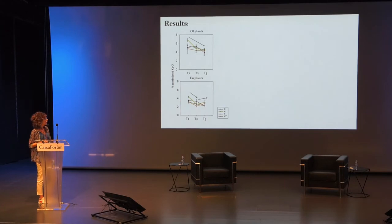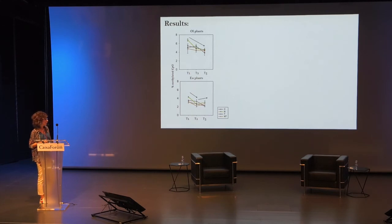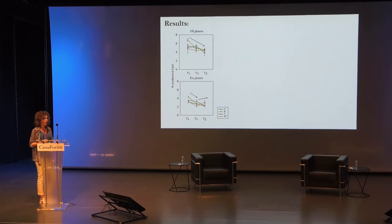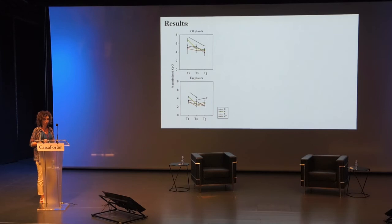Results revealed much higher DNA methylation levels in oligotrophic plants compared to eutrophic plants. In general, both plant groups displayed a high percentage of methylated cytosine, especially at T1 — after one week of initial stress exposure — with differences tending to decrease over the course of the stress exposure.